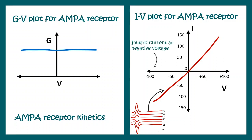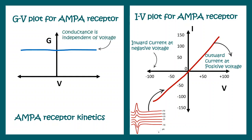In the negative voltage range, the AMPA receptor conducts inward current, which is reflected in the current traces. In the positive voltage range, the current direction reverses and becomes outward. The conductance plot confirms that conductance does not change with voltage.